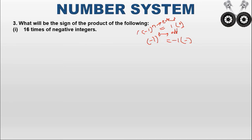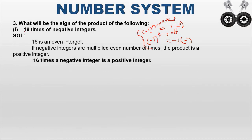These are the rules: if negative integers are multiplied an even number of times, the result is positive; if multiplied an odd number of times, the result is negative. Here, 16 is an even integer, so the product is positive.